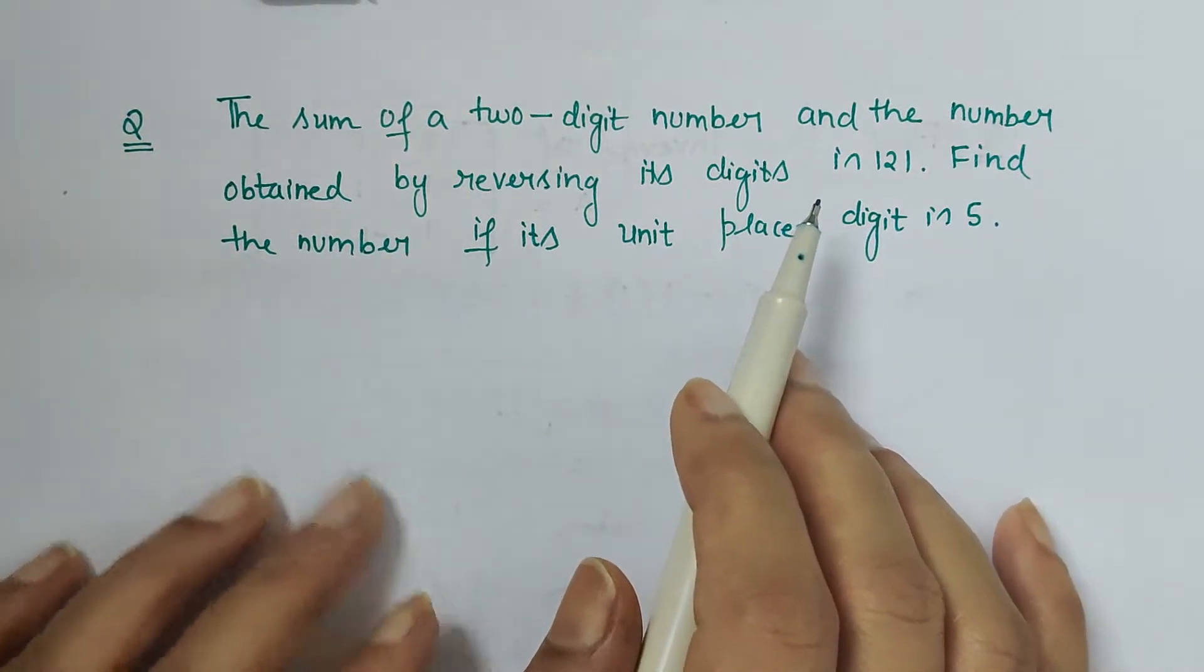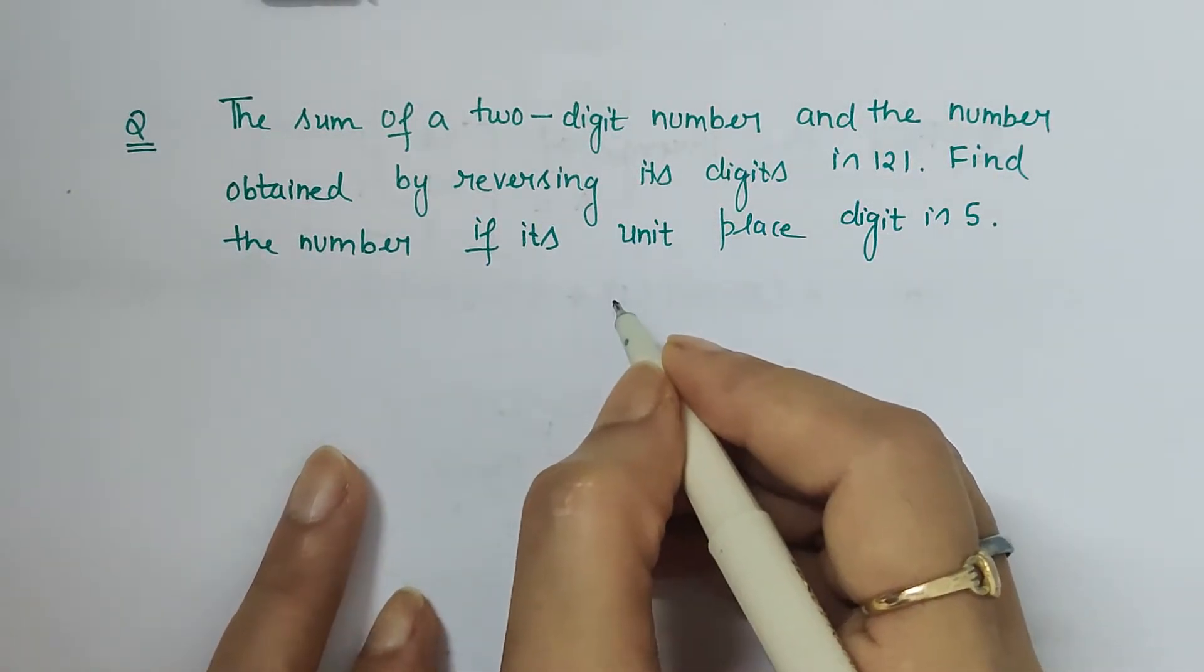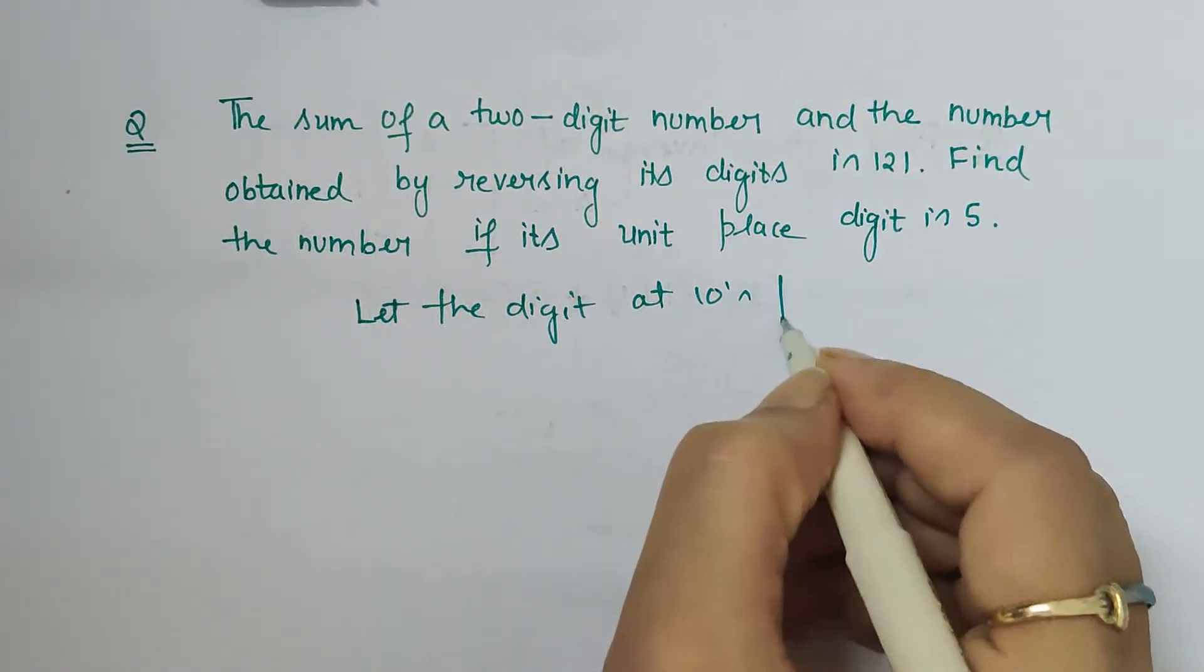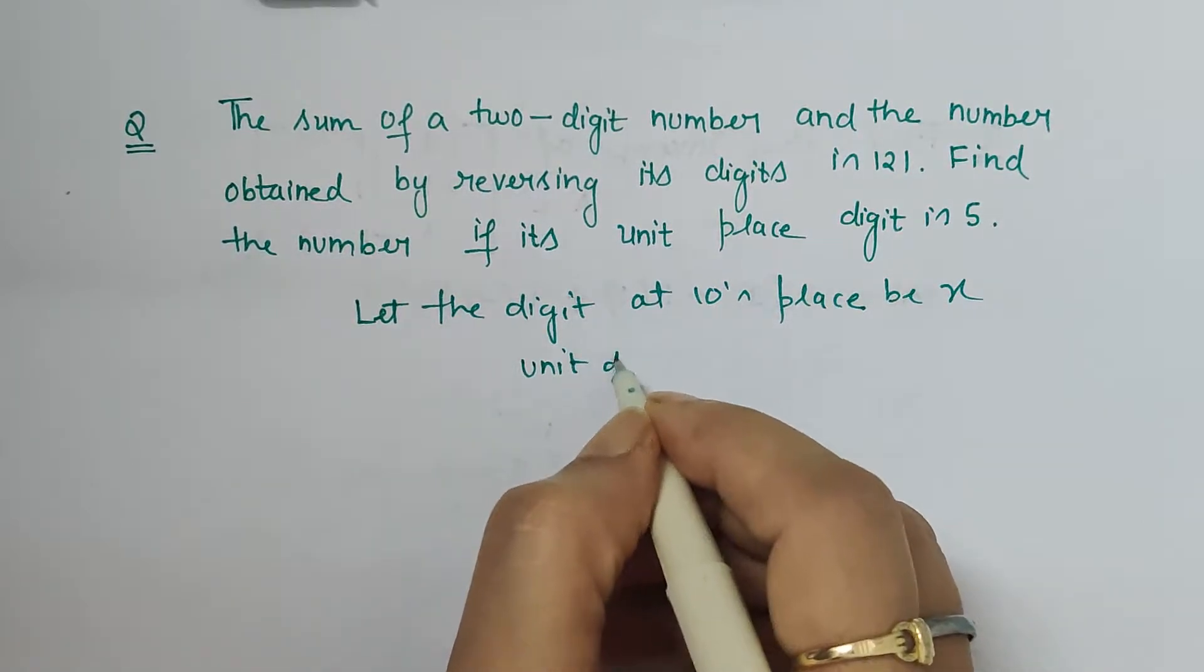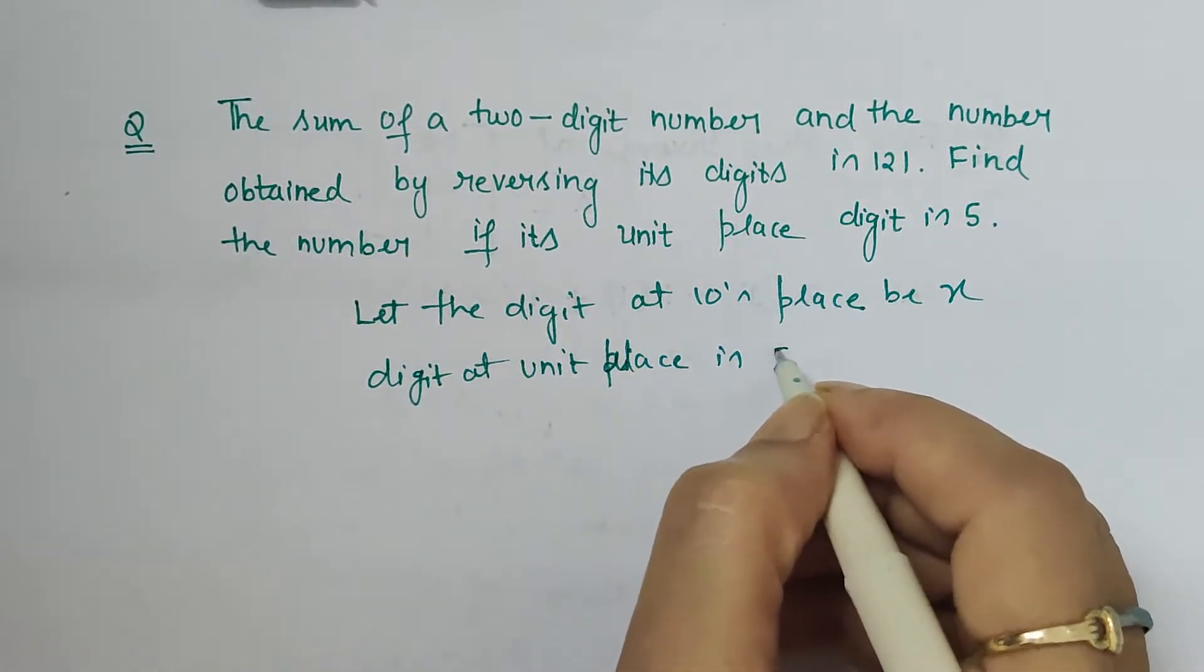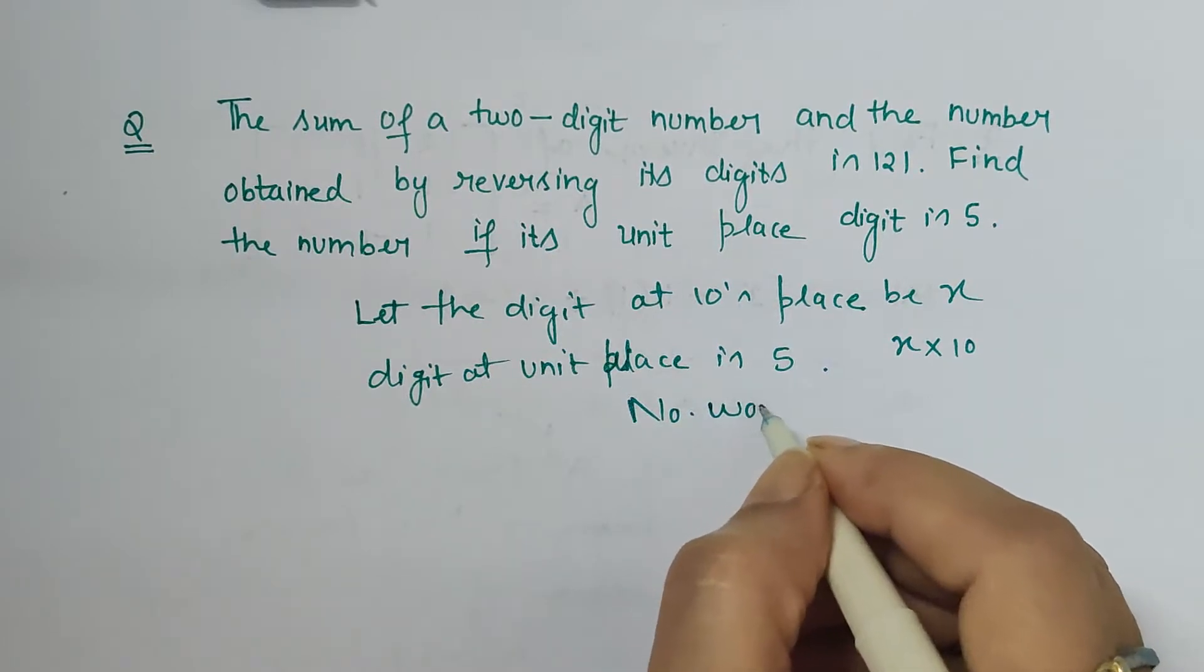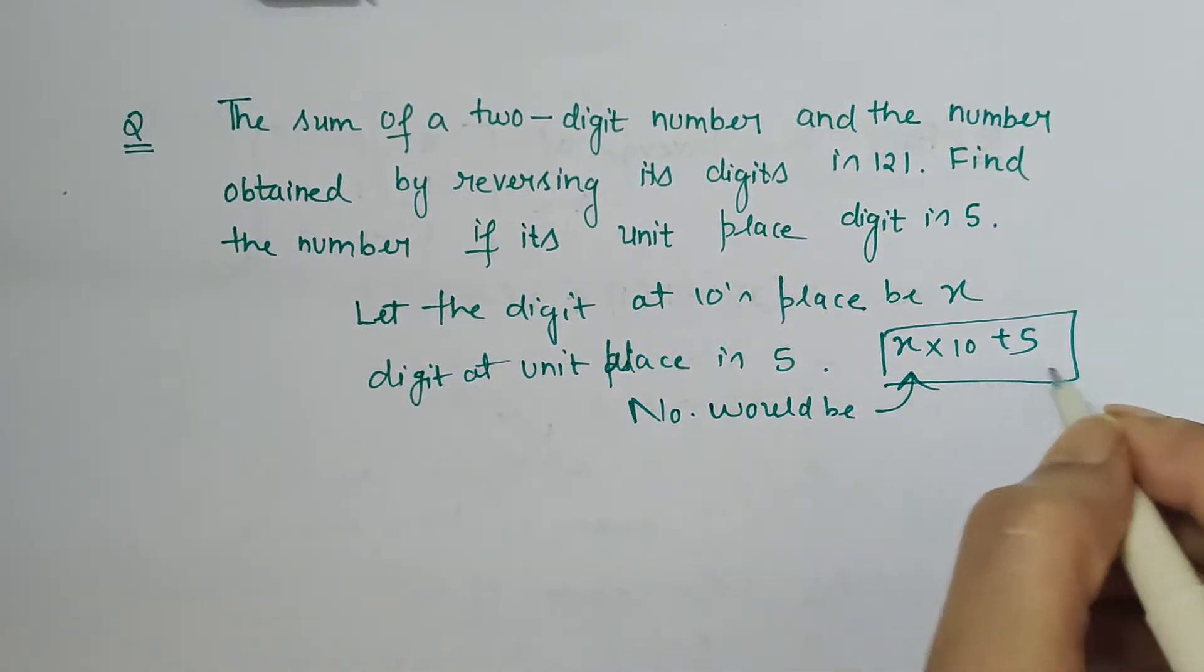So we must have some idea that how a two-digit number is written in expanded form. Here already we are given unit place is 5, so let the digit at tens place be x. The number would be x into 10 plus 5. This is an expanded form any two-digit number can be written in.